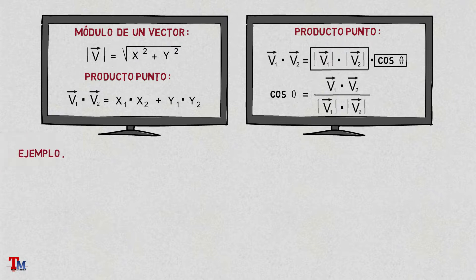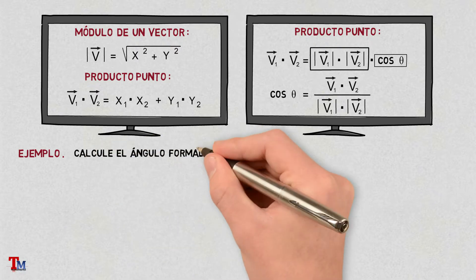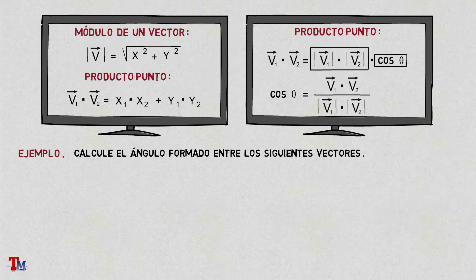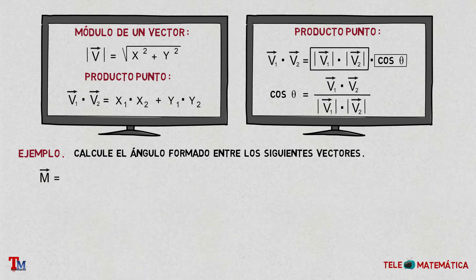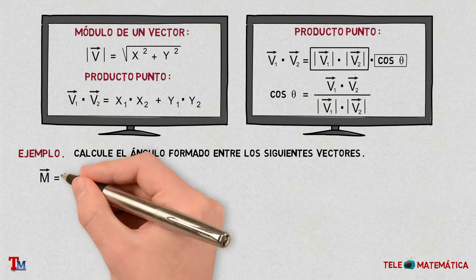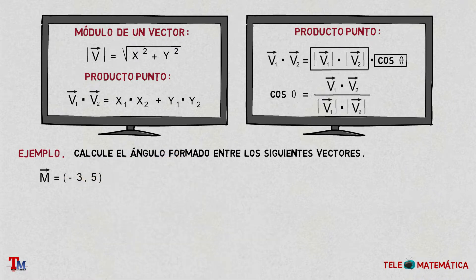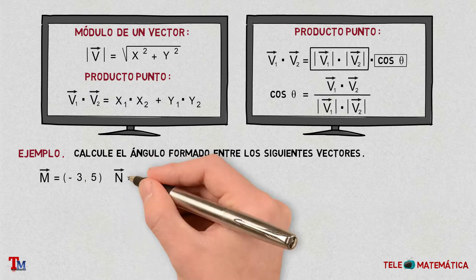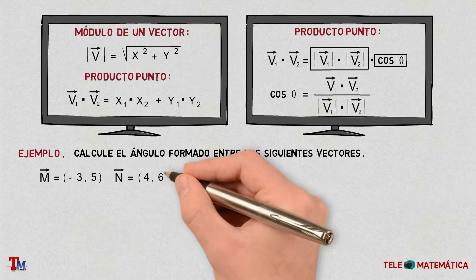Let's see an example to understand better. Calculate the angle formed between the following vectors: vector M with components (−3, 5) and vector N with components (−4, 6).